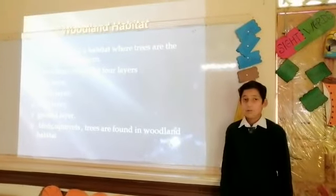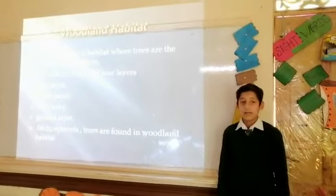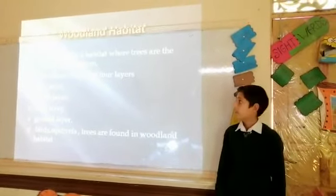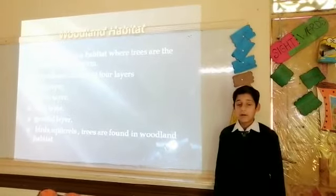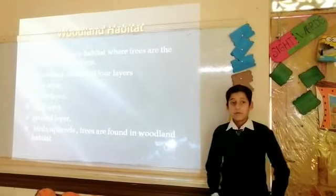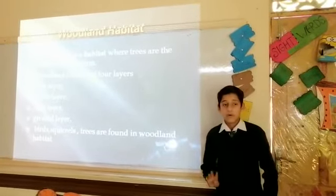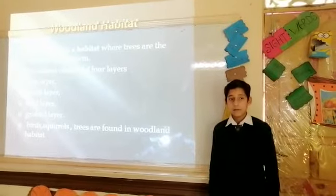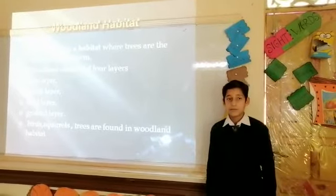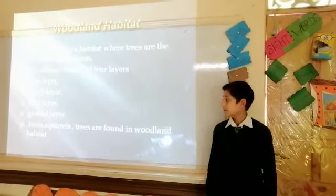Woodland habitat. A woodland is a habitat where trees are the dominant plant form. Woodland consists of four layers: tree layer, ground layer, field layer, and shrub layer.